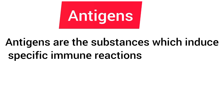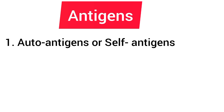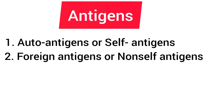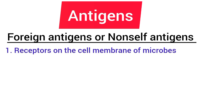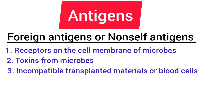Antigens are substances which induce specific immune reactions in the body. We have two types of antigens: self-antigens present on the body's own cells, such as the A and B antigens on red blood cells, and foreign antigens or non-self-antigens that enter the body from the external environment. Non-self-antigens include receptors on microbial organisms such as bacteria, viruses, and fungi; toxins from microbial organisms; materials from transplanted organs or incompatible blood cells; and allergens like pollens.